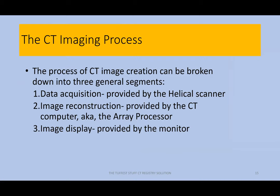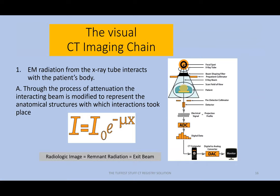Those were the 10 major components associated with the CT imaging chain. The CT imaging process itself is an image creation process that can be broken down into three general segments: data acquisition, provided by the scanner; image reconstruction, provided by the CT computer; and image display, provided by the monitor. Guess what? Test answer. The lecture continues with the visual CT imaging chain slides, which are interesting reading. I'd really like to listen to your questions now.